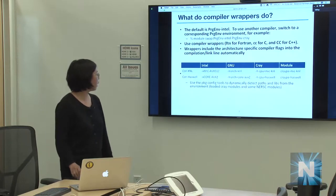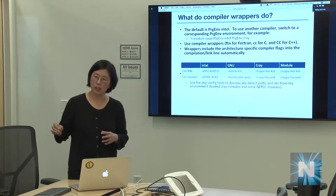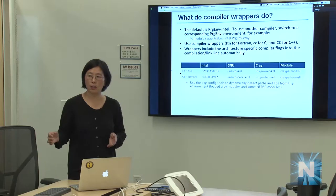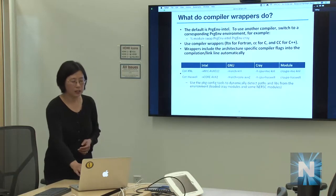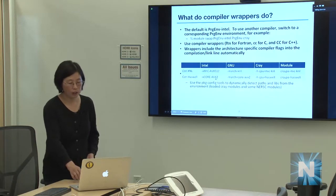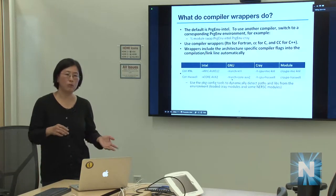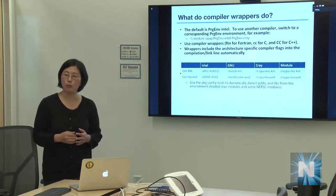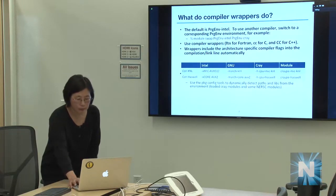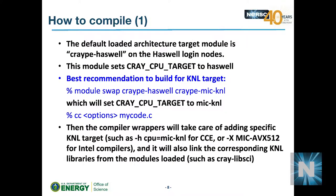Behind the scenes, a module called CrayPE-Target controls architecture targeting. On Haswell login nodes, CrayPE-Haswell is loaded, and the wrapper links -xcore-avx2 for the Intel compiler. For KNL, you load CrayPE-MIC-KNL and the wrapper will link the appropriate AVX-512 target flags automatically.